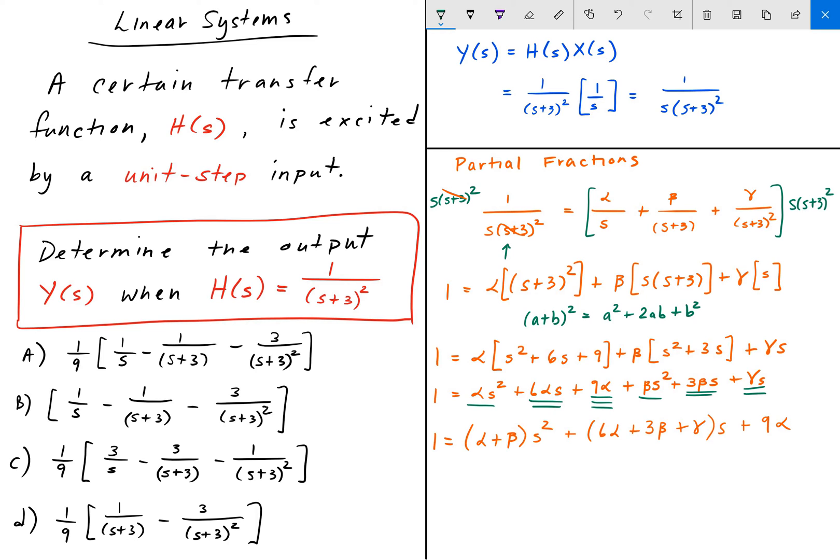So now from here, we know that the left side of this equation has no s² term. So that states that alpha + beta equals 0. And also, it has no s terms. So 6alpha + 3beta + gamma also equals 0. But we do know that 9alpha equals 1. So we can solve for alpha by knowing that 9alpha equals 1 and therefore alpha equals 1/9.